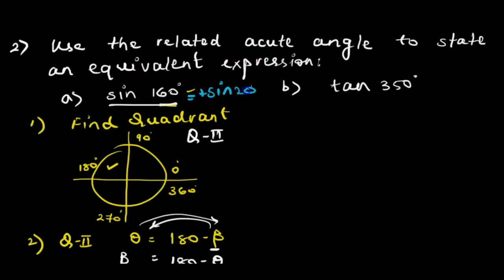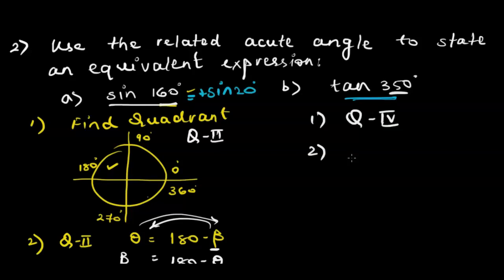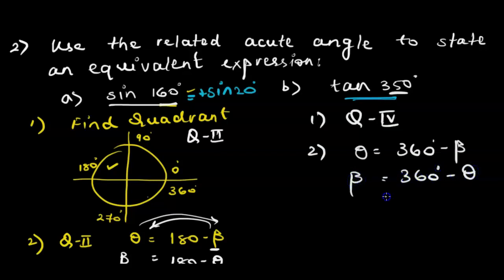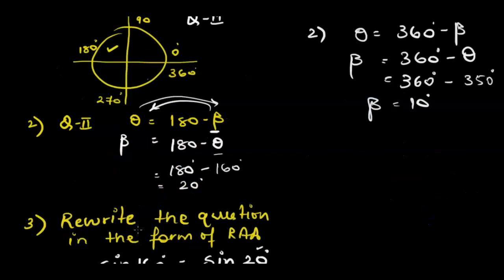Now let's apply these steps to find an equivalent expression for tan 350 degrees in terms of the related acute angle. Step one: find the quadrant. 350 degrees lies in the fourth quadrant, between 270 and 360. Step two: for quadrant four, the relationship is beta = 360 minus theta. So beta = 360 minus 350 = 10 degrees.